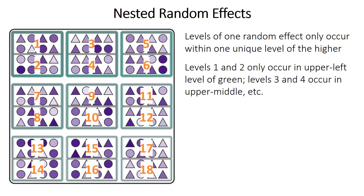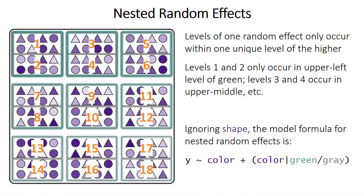The previous examples were for a single level of random effect, but it's possible to have more complicated study designs. For example, you might have random effects that are nested, which means one level of one random effect only occurs within one unique level of the higher random effect — gray box one only occurs in the upper left green box, and gray box three only occurs in the upper middle green box; they don't occur in all of them. For a linear model explaining the outcome as a function of the color of each point, you would indicate nested random effects with the gray level nested within the green random effect, indicated by a slash.